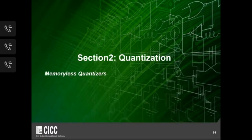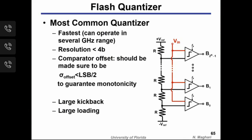Section 2 covers quantization methods, divided into memoryless quantizers and quantizers with memory. Memoryless quantizers — those that do not store any state from previous cycles — include the flash quantizer, which is by far the most commonly used in Delta-Sigma ADCs and the fastest of any ADC type. However, resolution in Delta-Sigma applications is typically limited to 4 bits and below, as going beyond introduces significant drawbacks.